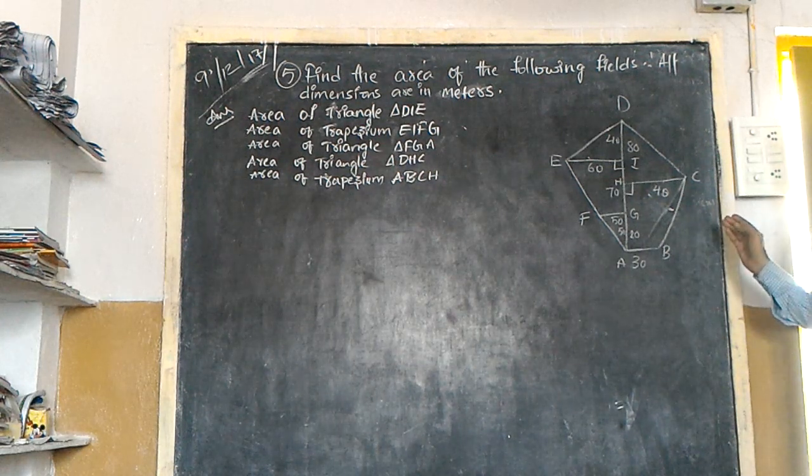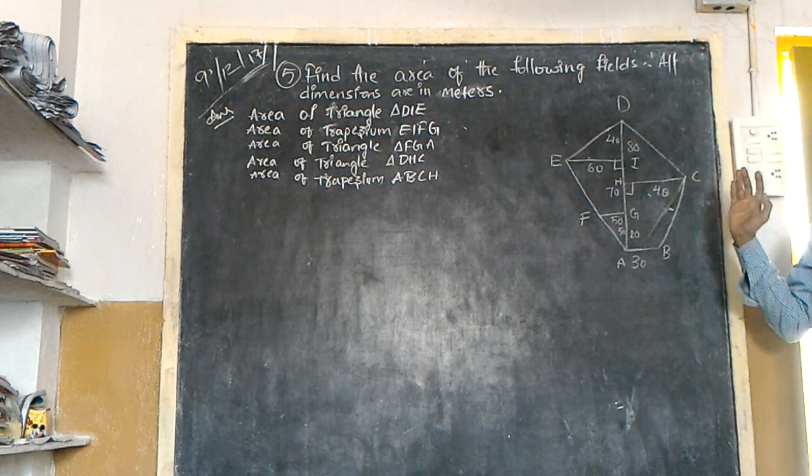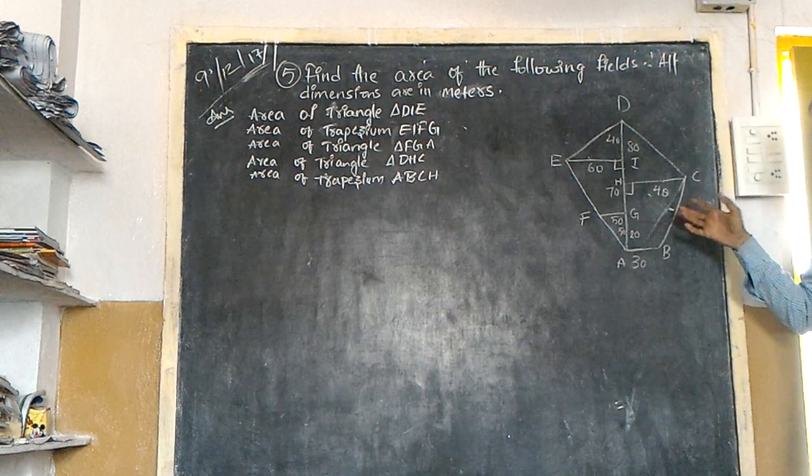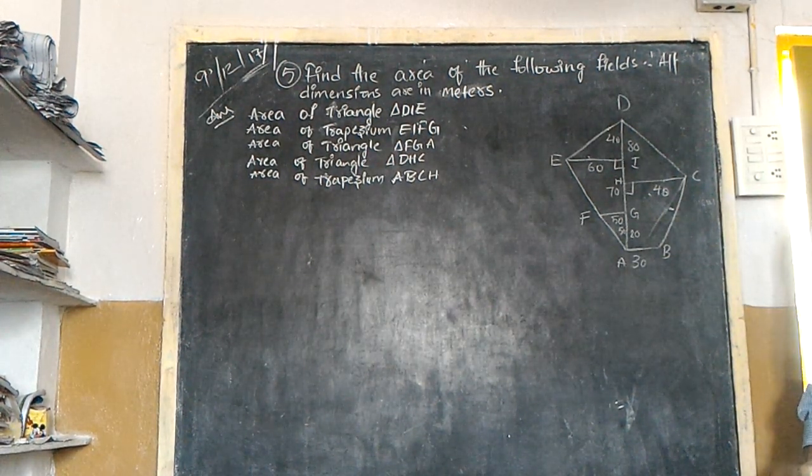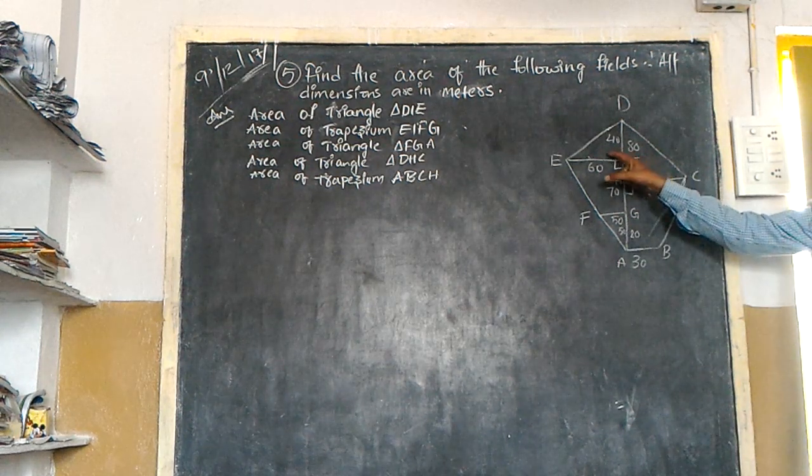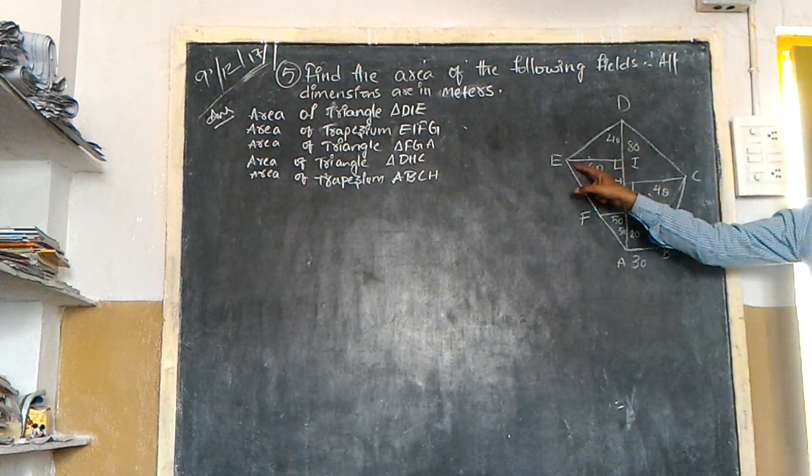I told you before, first divide the field into rectangles and triangles, but it has been given directly. We have to find the area of this field. See here, the first one is one triangle.